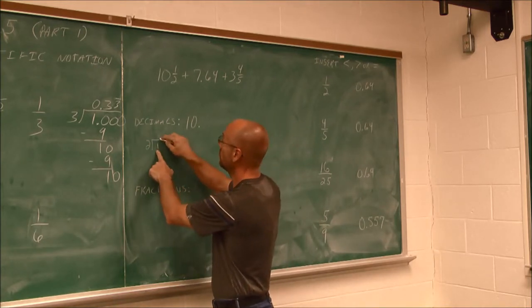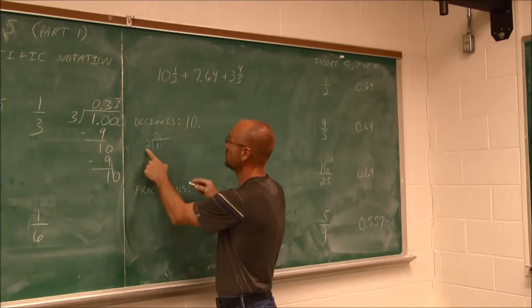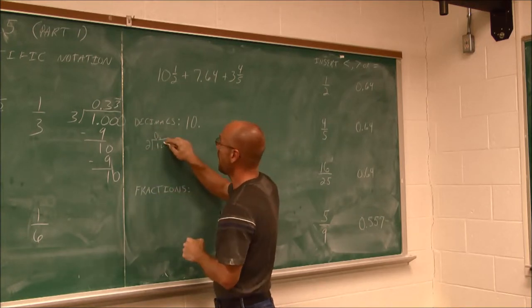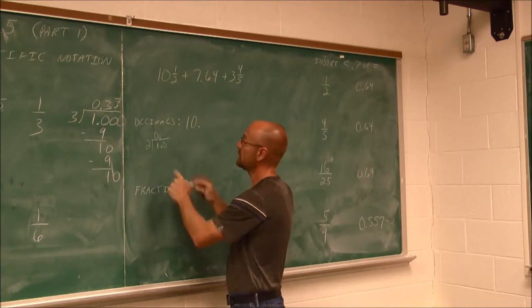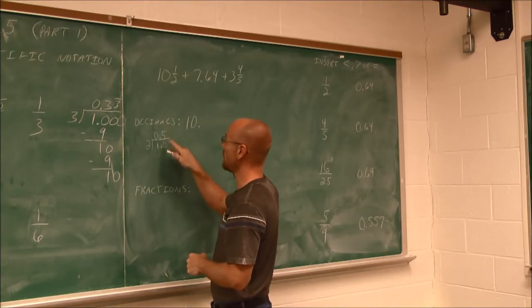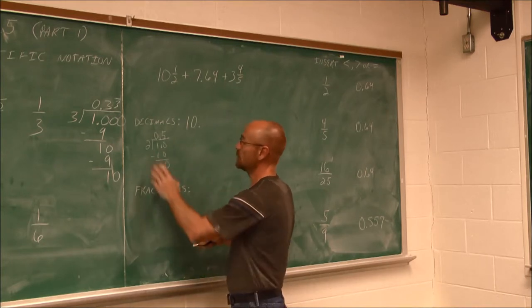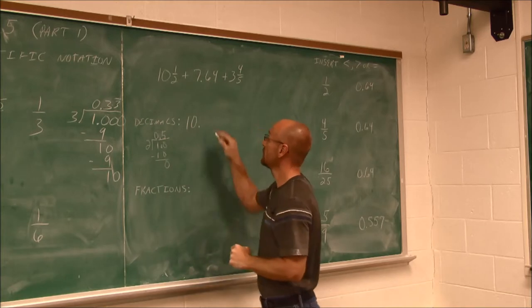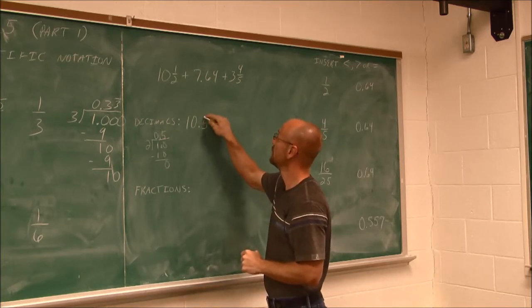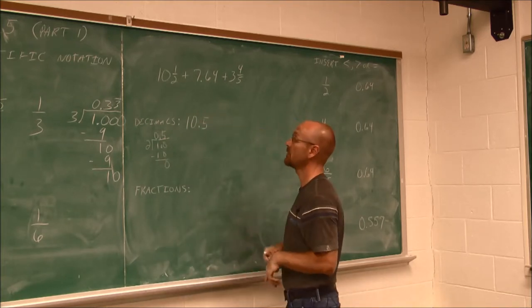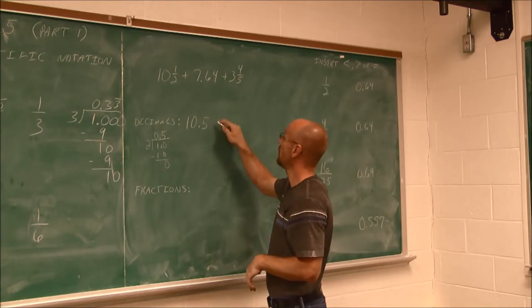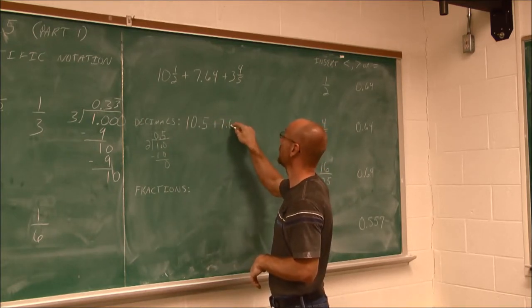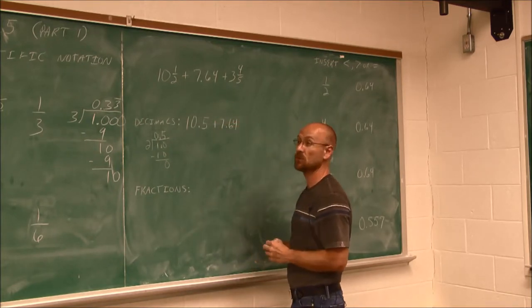If we did that division, 2 doesn't go into 1, so I introduce that decimal. 2 goes into 10 5 times. 5 times 2 is 10. I find that difference to be 0. We've gotten to 0. There's no remainder, 0.5. So it's 10.5. We've converted that to a decimal. 7.64 is already a decimal.